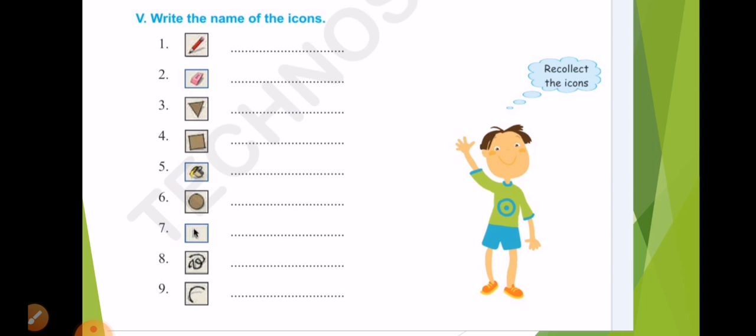Third one, POLYGON. Okay, what is the spelling for POLYGON? P-O-L-Y-G-O-N, POLYGON. Then fourth one, yes, a RECTANGLE.